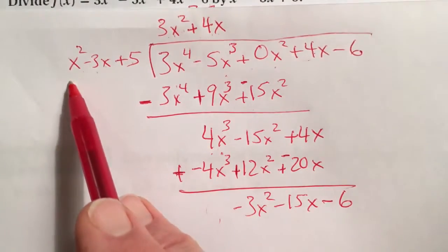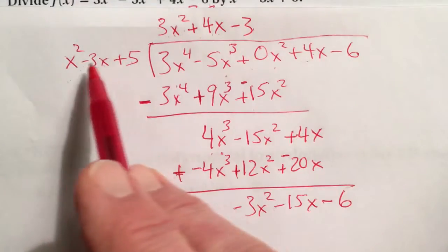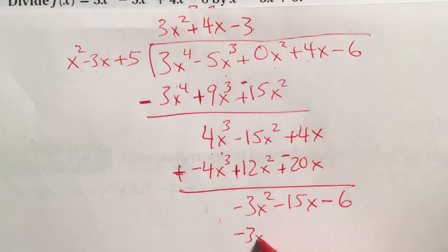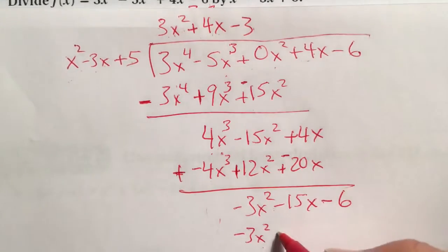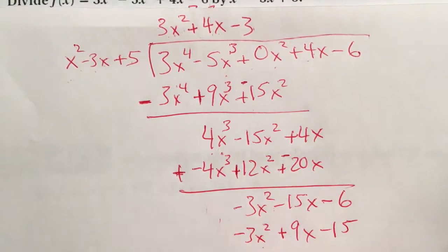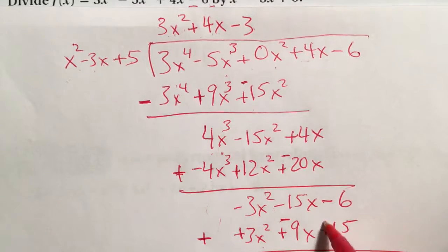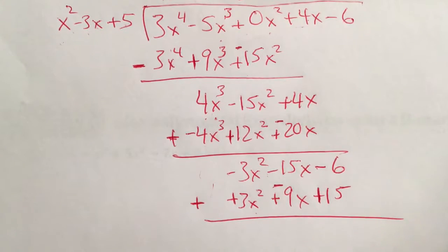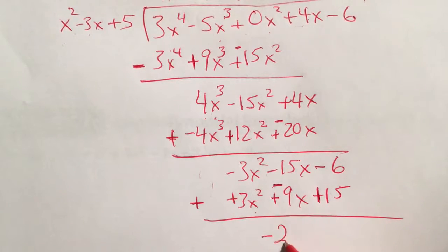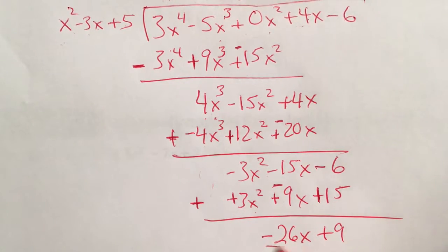How many times does x^2 go into negative 3x^2? We get exactly a negative 3. So negative 3 times x^2 is negative 3x^2, it matches perfectly. Negative 3 times negative 3x is positive 9x. Negative 3 times 5 is negative 15. When we subtract, we're going to change all of the signs. Changing the signs, plus to negative to plus. When we finish this off, those go away. This becomes negative 26x. This becomes a 9.